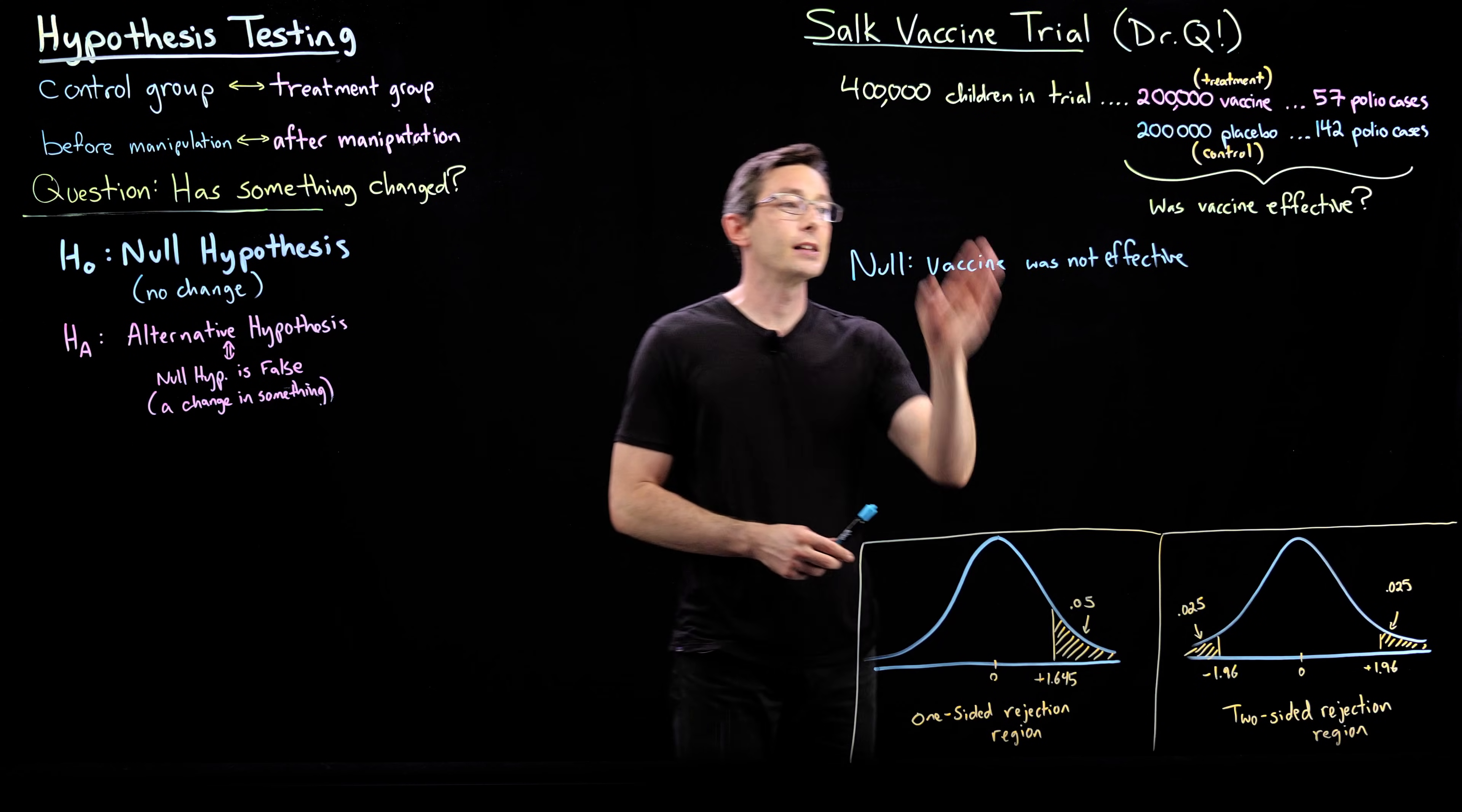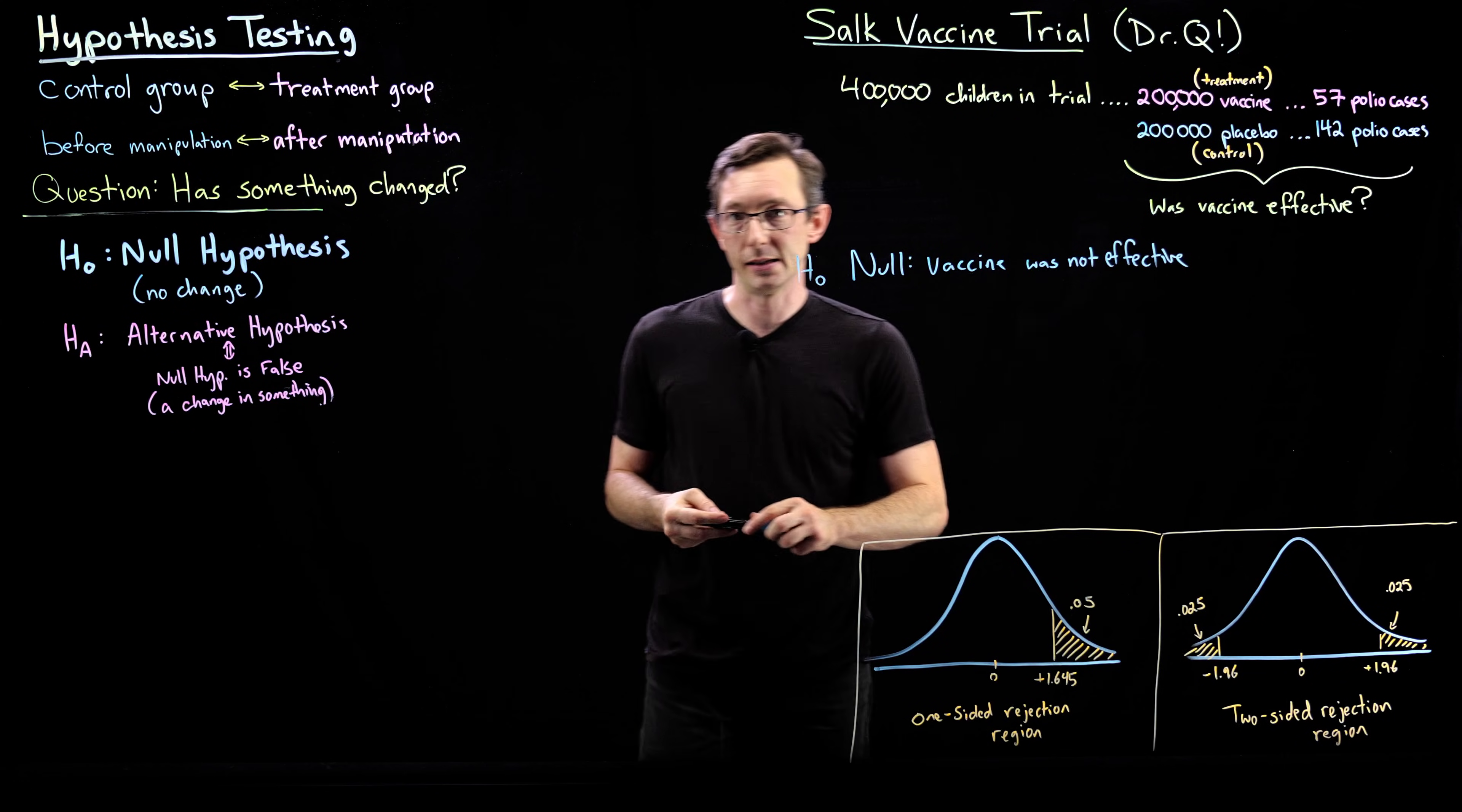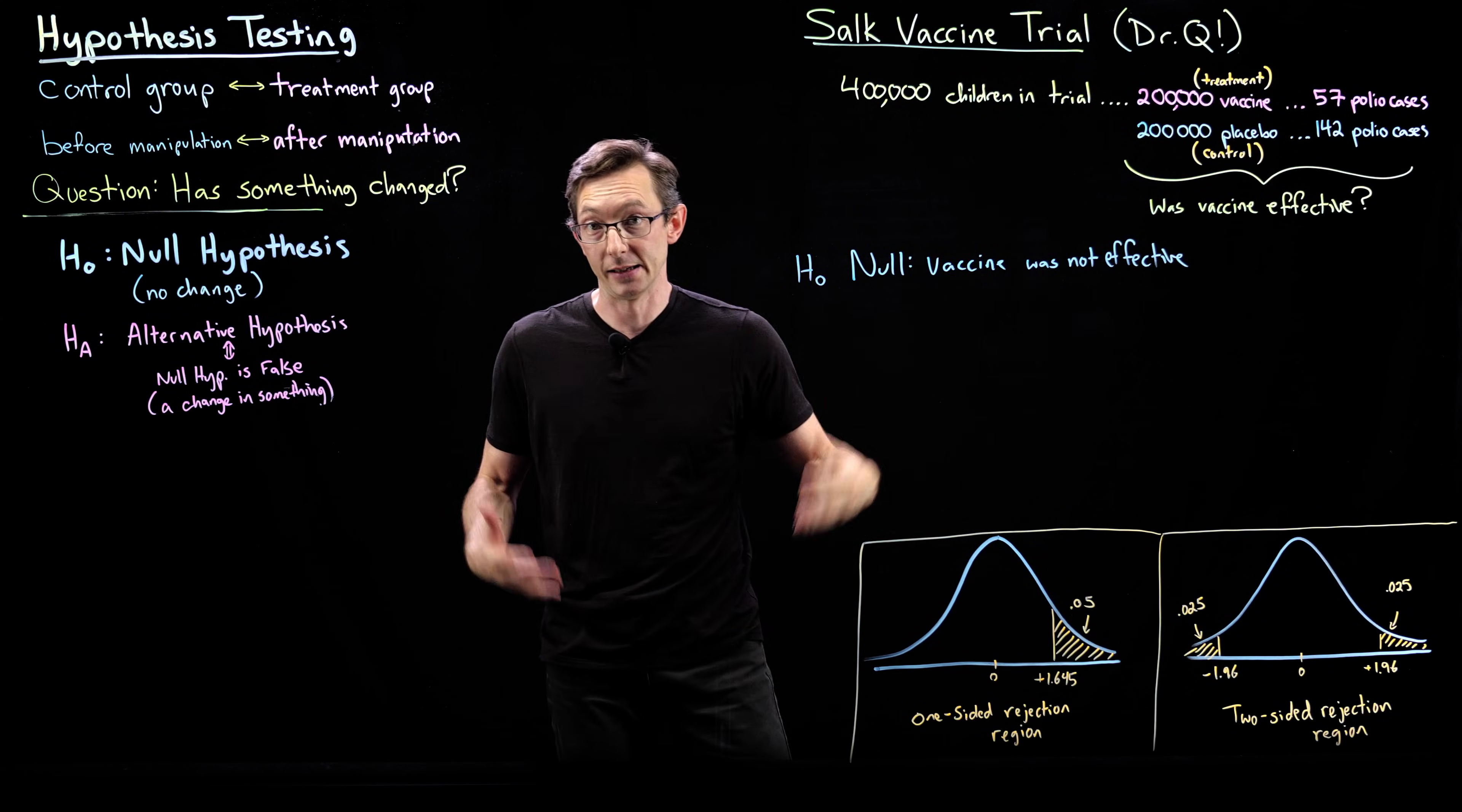Now you couldn't switch tests after seeing the results. That would be cheating. You have to decide which test you're doing before you get your results. But I think it's pretty reasonable to do a one-sided test on a vaccine that you think probably is only going to make things better and not worse. Null hypothesis is that the vaccine was not effective. This is H0, the null hypothesis. And so now what we're going to do is assuming that null hypothesis, we're going to build a test statistic.